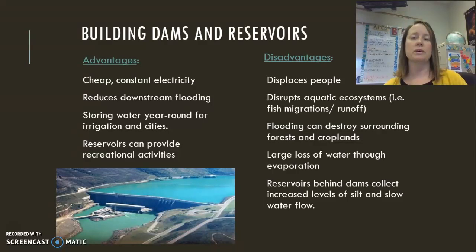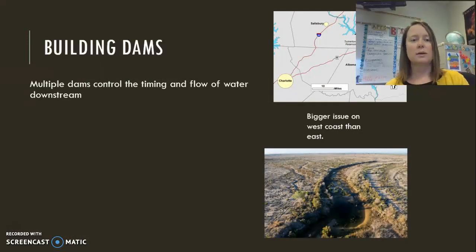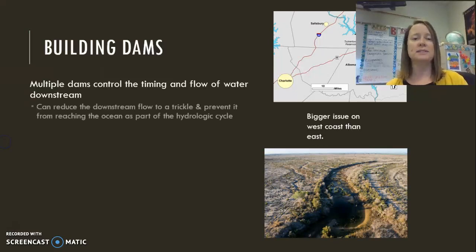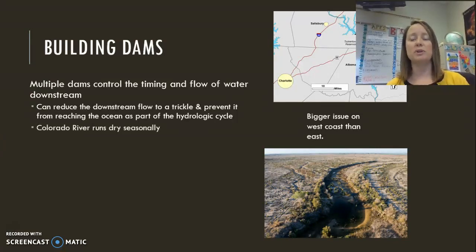Dams also block sediment from carrying nutrients downstream to the floodplains, and this causes reservoirs to become more shallow over time, which can slow water flow. Most rivers that have dams usually have multiple dams, and ultimately the river can slow to a trickle and no longer reach the ocean. This is not as big a problem on the east coast because of plenty of rainfall, but on the west coast, like the Colorado River, it now runs dry.